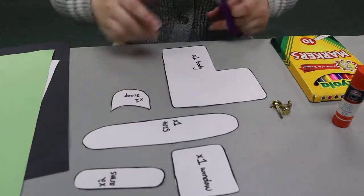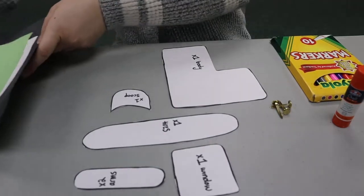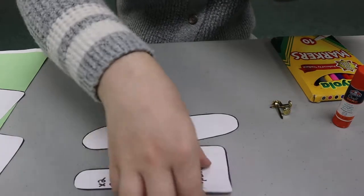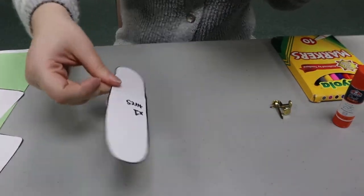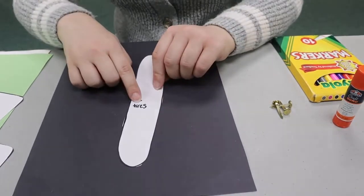All right, now that we have all of our pieces, it is time to trace them onto our paper. So start with the black construction paper and you're going to take the longest ovally shape. These are going to be our tires.